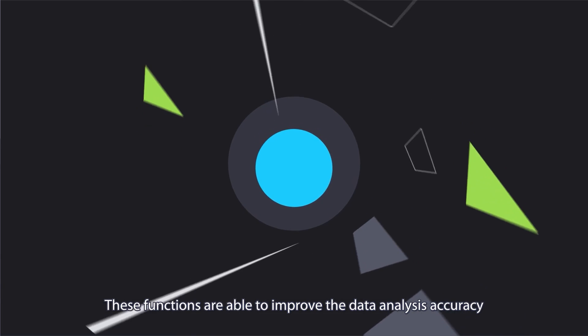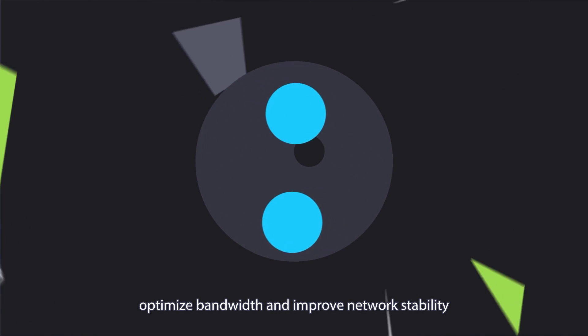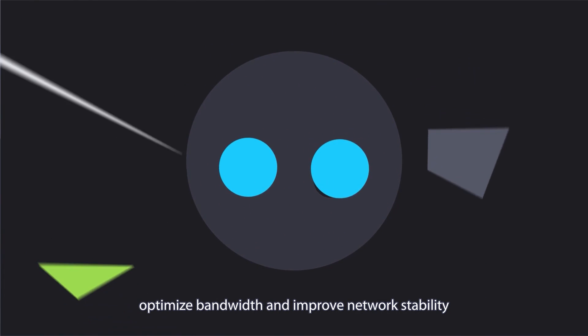Filtering eliminates unwanted traffic by permitting only traffic of specific types. These functions are able to improve the data analysis accuracy, optimize bandwidth, and improve network stability.